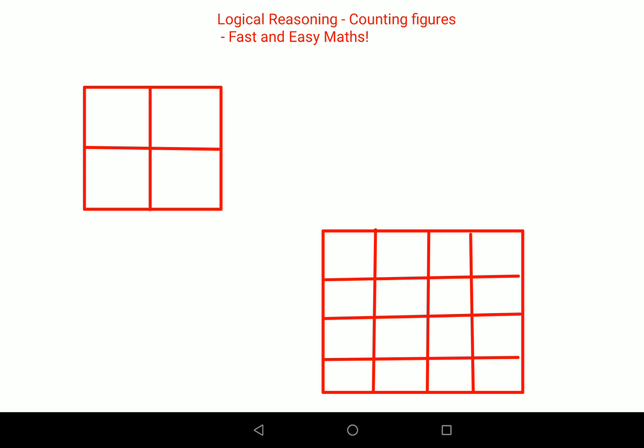So here I can say this is 2 by 2. If it is 2 by 2, all you have to do is 1 squared plus 2 squared. That gets you 1 plus 4, that's 5. This is the total number of squares in this particular grid.